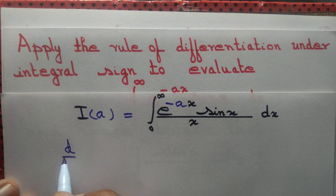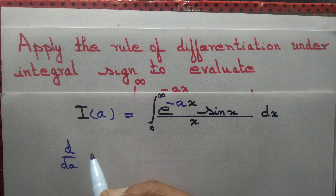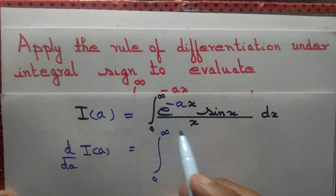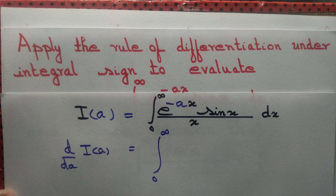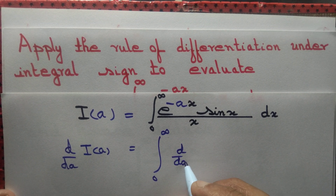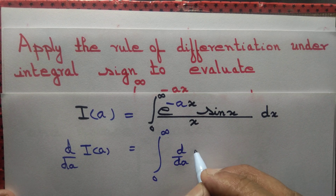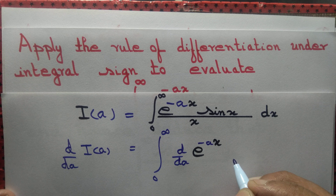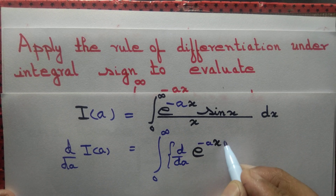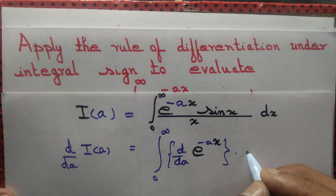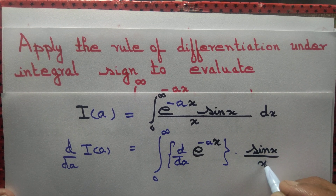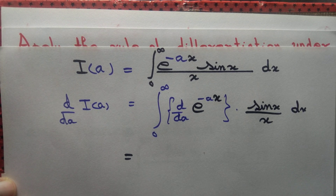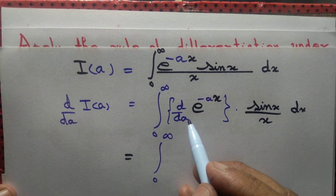Now let us differentiate both sides with respect to a. This function is just a function of a, so we differentiate only with respect to a: d/da of e^(-ax). When differentiating with respect to a, we regard other quantities as constant — so sin(x)/x, in fact x itself, is regarded as a constant.